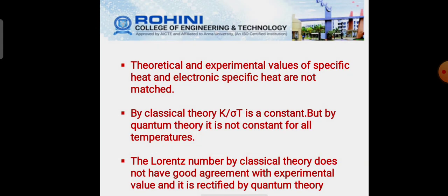Theoretical and experimental values of specific heat and electronic specific heat are not matched. By classical theory, K by sigma T is a constant. But by quantum theory, it is not constant for all temperatures. The Lorentz number by classical theory does not have good agreement with experimental value and it is rectified by quantum theory.